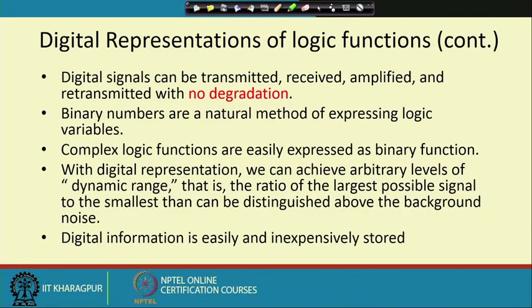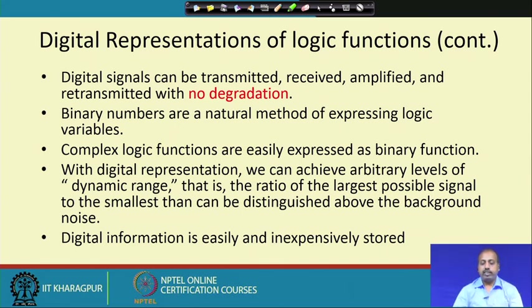Digital signals can be transmitted, received, amplified, and retransmitted with no degradation. If 1 is represented by +12 volt and 0 by −12 volt, then at the receiving station, if you get an intermediary value like −5 volt, you can say it is close to −12 volt and take it as 0. Even if the analog voltage has degraded, the digital value is not degraded — we can still recover it as 0.